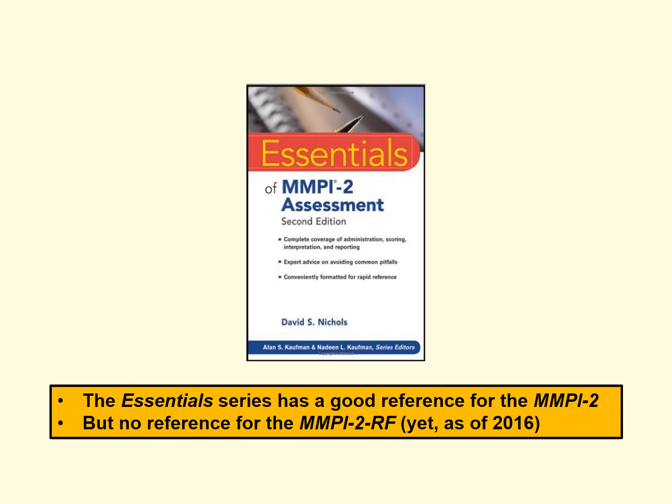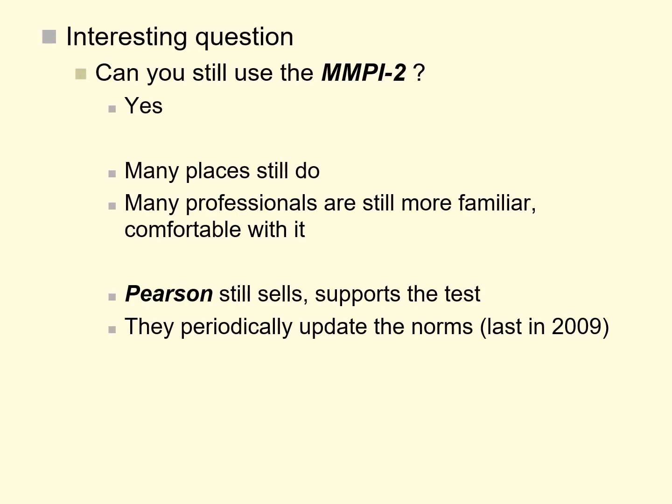There are published books about the MMPI-2, including one from the Essentials series from Wiley, which provides a very nice summary of how this test works and how you can interpret the various scales and indices on it. As of late fall 2016, the Essentials series hasn't yet published a book for the MMPI-2-RF. That raises an interesting question: can you still use the MMPI-2? The answer is yes.